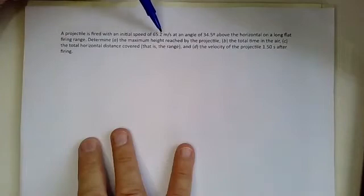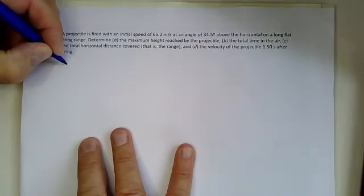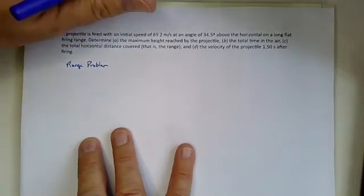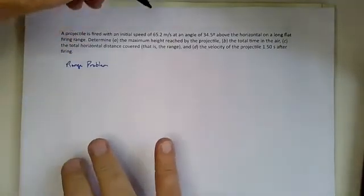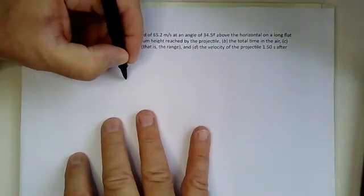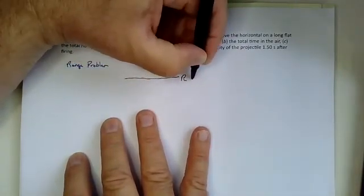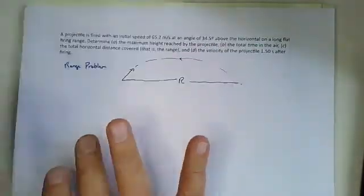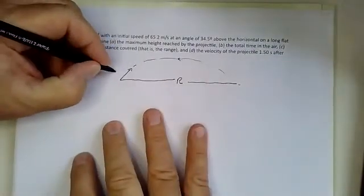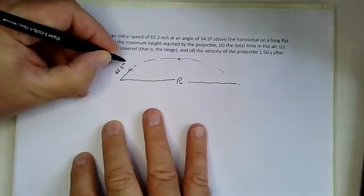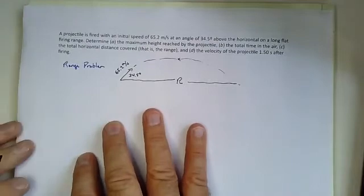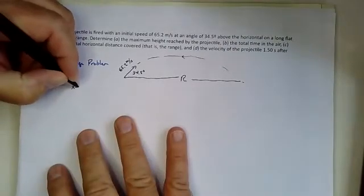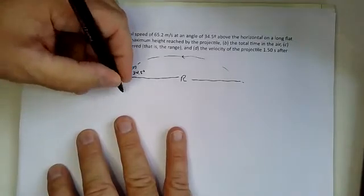Projectile fired with initial speed at an angle above the horizontal on a long flat firing range. So this is a range problem. We have a lot of information here, so let's take a shot. We want total time in the air, total distance, and so the distance is equal to the range. And it's shot at an angle, like flies through the air, so we want to find out that height as well. 65.2 meters per second at an angle of 34.5 degrees. And then the velocity of the projectile at 1.5 seconds. We have the motion along x, and then we have the motion along y.